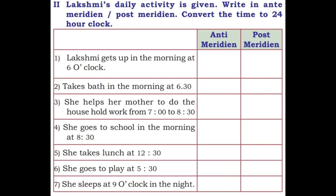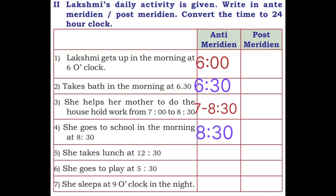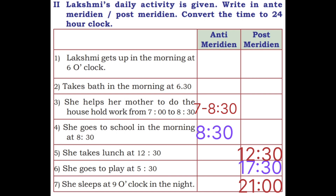Second main: Lakshmi's daily activity is given. Write in anti meridian or post meridian and convert the time to 24-hour clock. Lakshmi gets up in the morning at 6 o'clock — morning means anti meridian. Takes bath in the morning at 6:30 — also anti meridian. Helps her mother from 7 to 8:30 — anti meridian. Goes to school at morning 8:30 — anti meridian. Takes lunch at 12:30 — post meridian. Goes to play at 5:30, that is 17:30 — post meridian. Sleeps at 9 o'clock at night — post meridian.